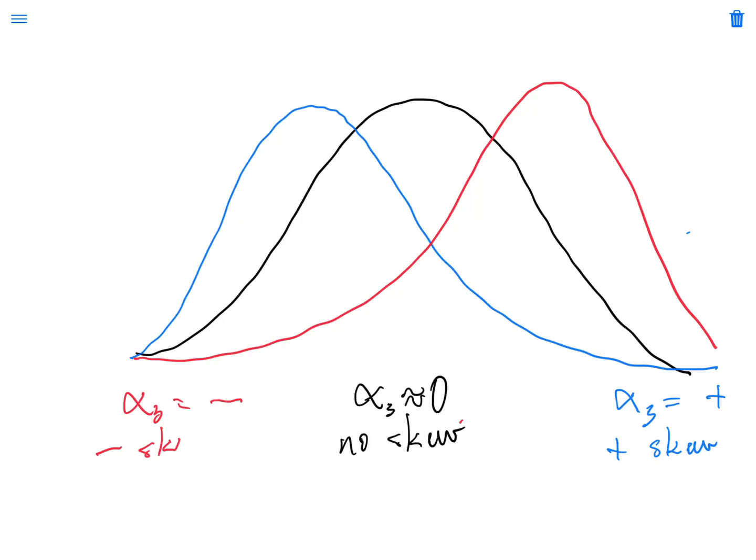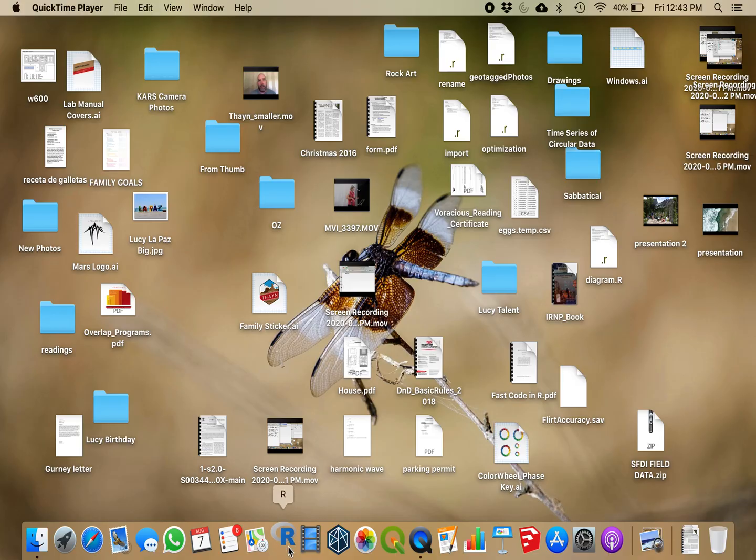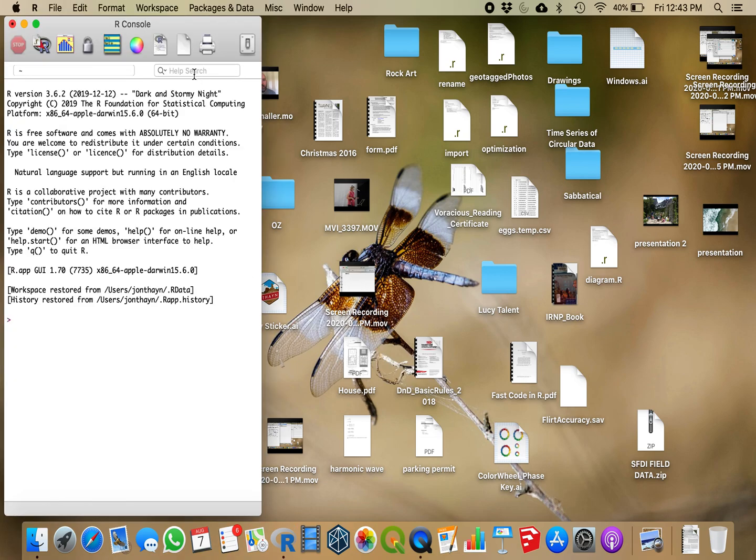So skewness is a comparison of the weights of the tails, and it ignores all of the values that are near the mean. All right, let's calculate skew in R.